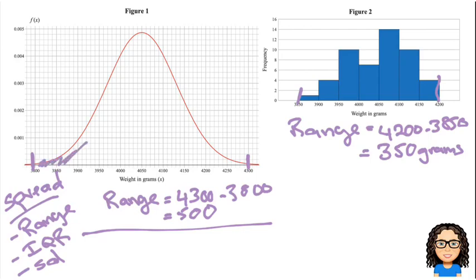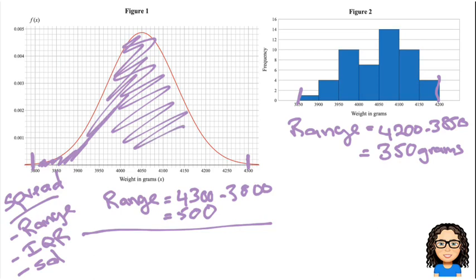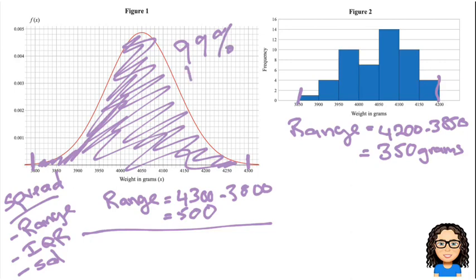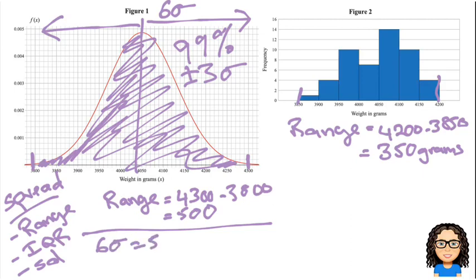I know that 99% of my data, so if I shade in the area underneath that curve, 99% of that data is contained within three standard deviations. So that means if I take the mean and go back by three standard deviations and up by three standard deviations, 99% of the data is covered inside that range. So that gives me a total range of six standard deviations, three below, three above. I know my range is 500, so I can say, well, six standard deviations is equal to 500. So that means one standard deviation is 500 divided by six, which is going to be 83.3 recurring, 83 and a third grams.